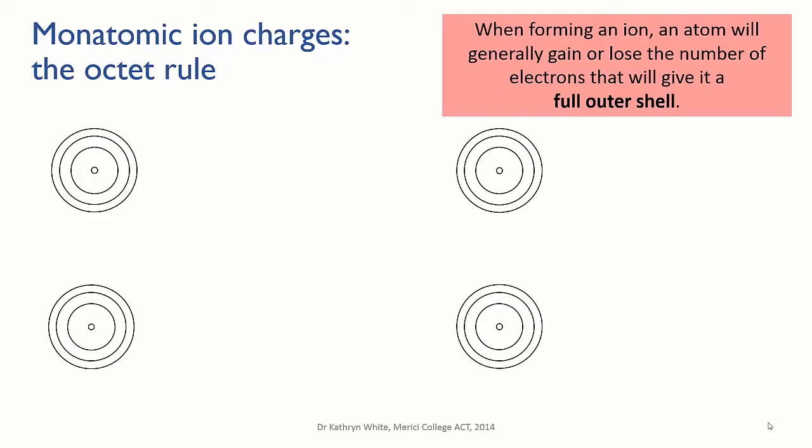Remember in the last video we found that we could read the number of valence electrons in atoms by looking at which vertical group the element was in on the periodic table. We can use that same information to work out what kind of ion the element most likes to form.